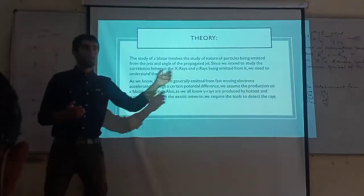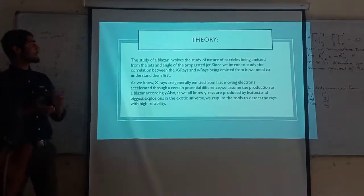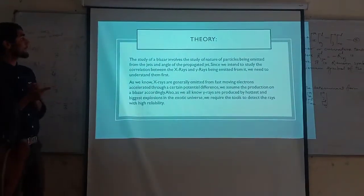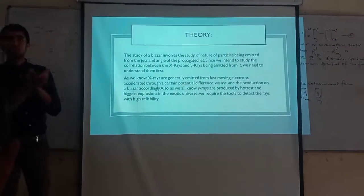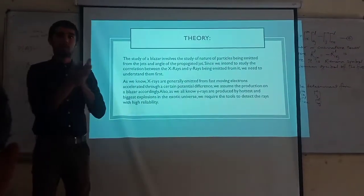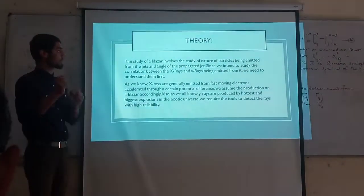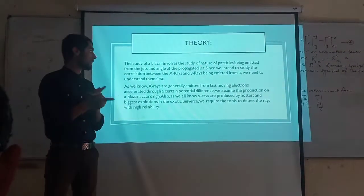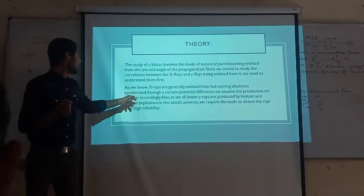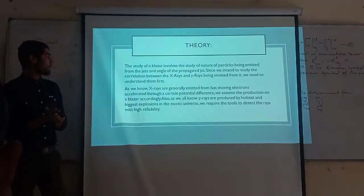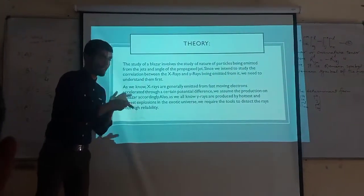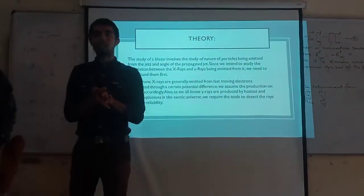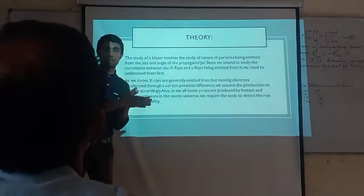Next is theory. The theory of a blazar involves the nature of particles being emitted from the jets and the angle of these propagated jets. Since we intend to study the correlation between the X-rays and gamma rays emitted from it, we need to understand them first. X-rays are generally emitted from fast-moving electrons accelerated through a certain potential difference. Gamma rays are produced by the hottest and most energetic explosions in the universe — naturally occurring events. We require tools to detect these rays reliably.